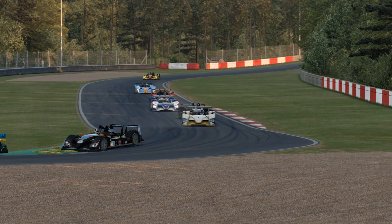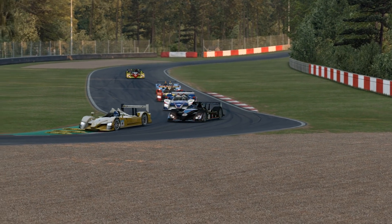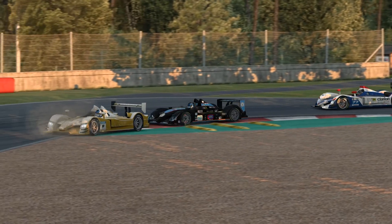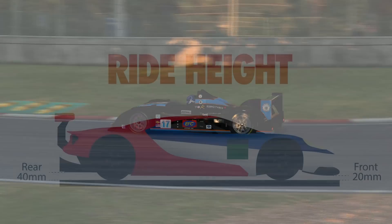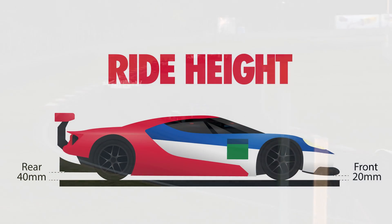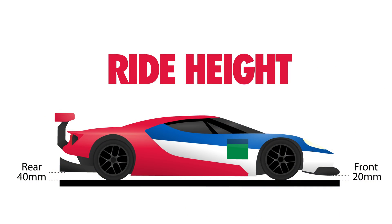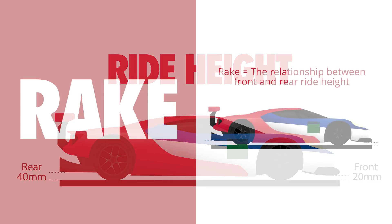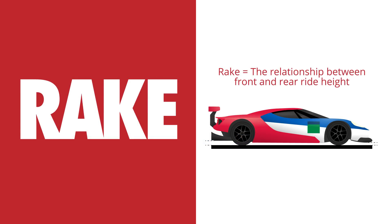Before we move on and talk about how and why you might alter ride height settings, it's important to get the terminology right. Ride height is the distance between the ground plane and the underside of the car. And when we're talking about ride height you'll also hear people talking about rake.